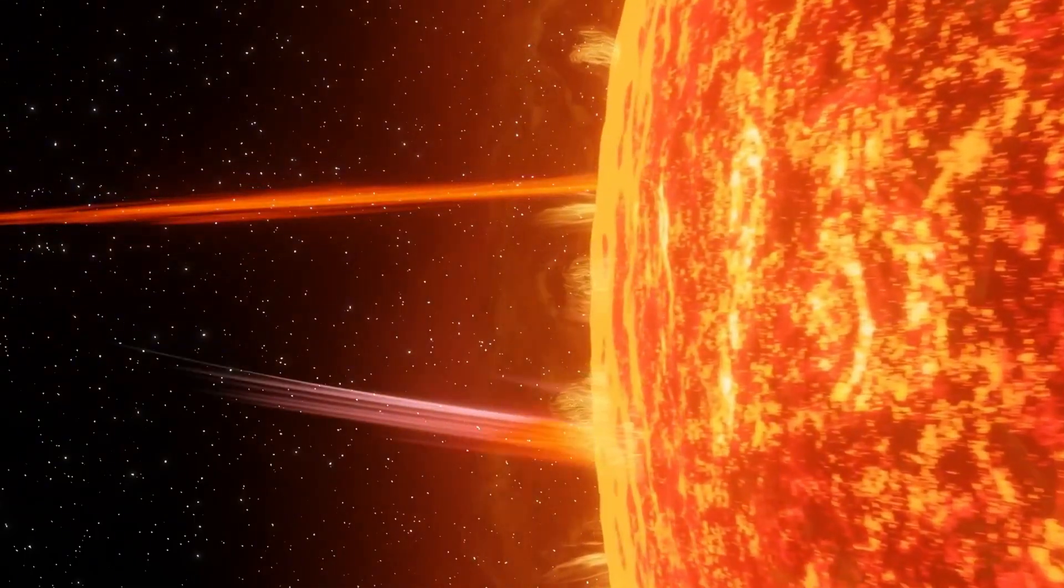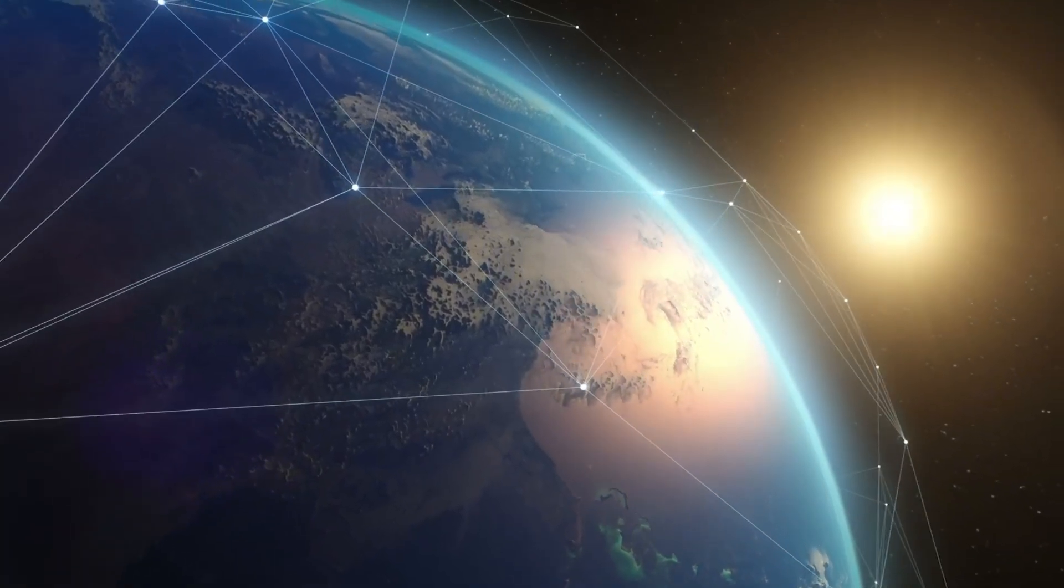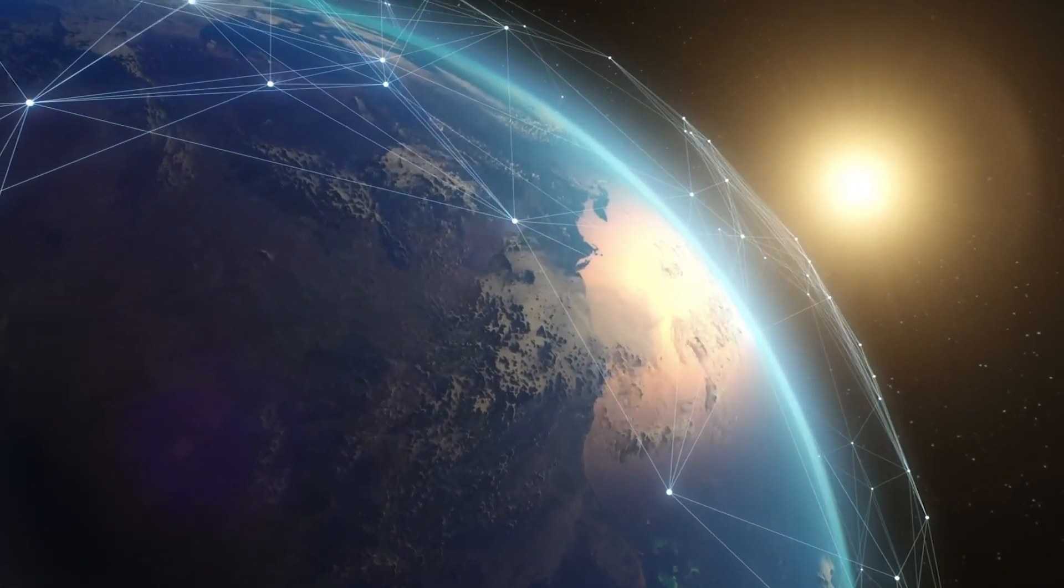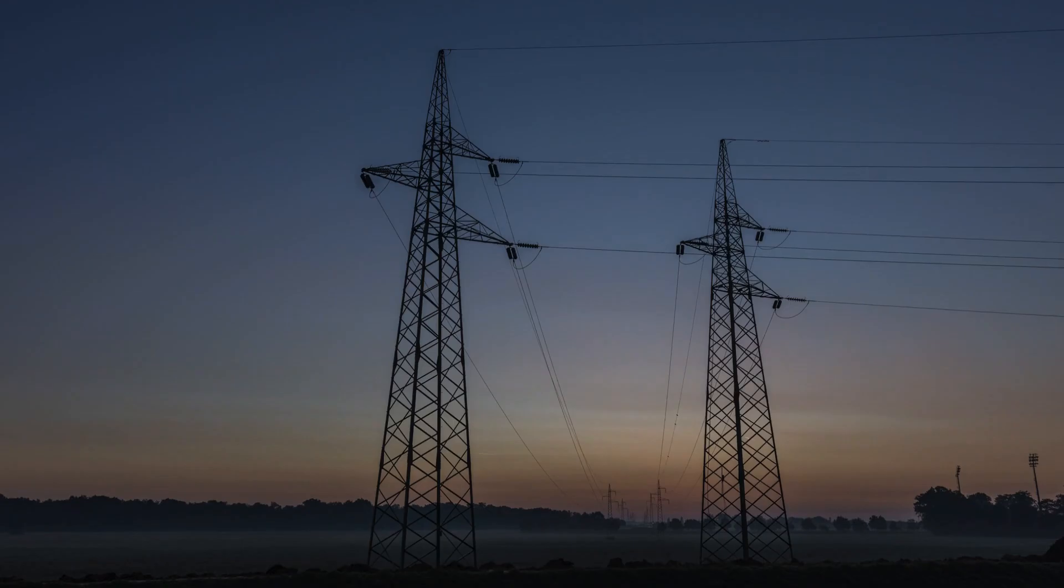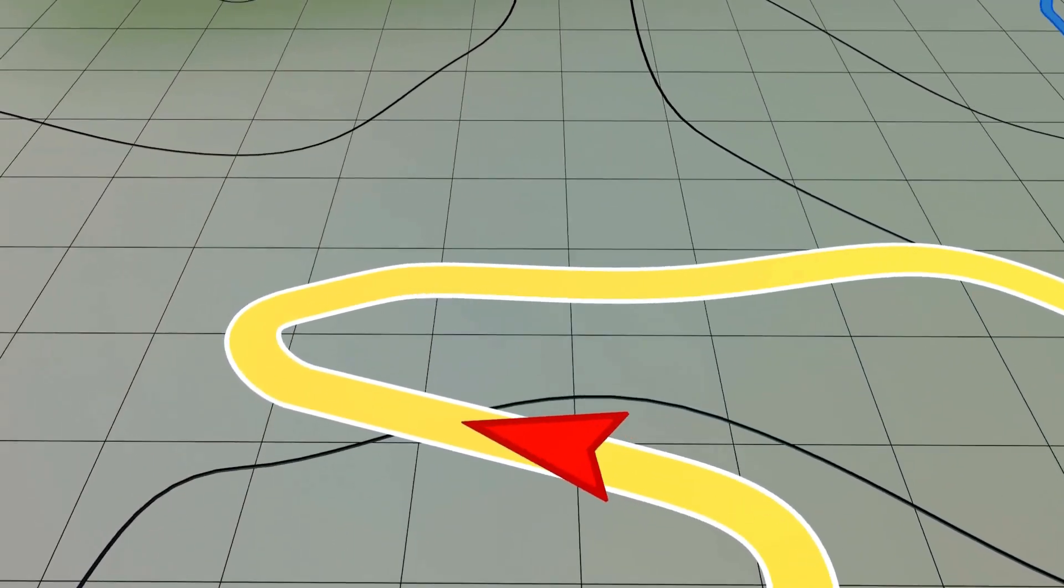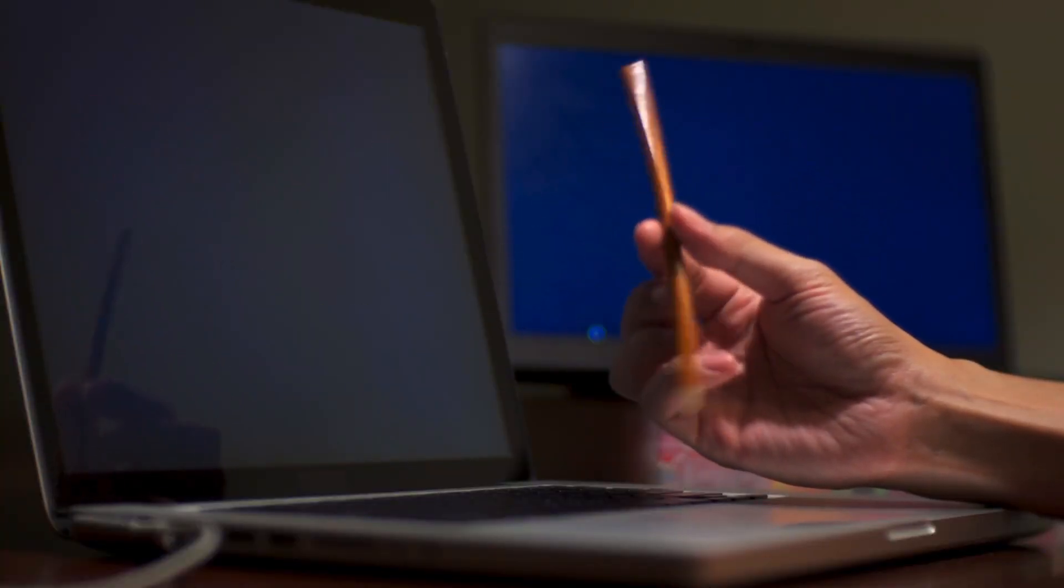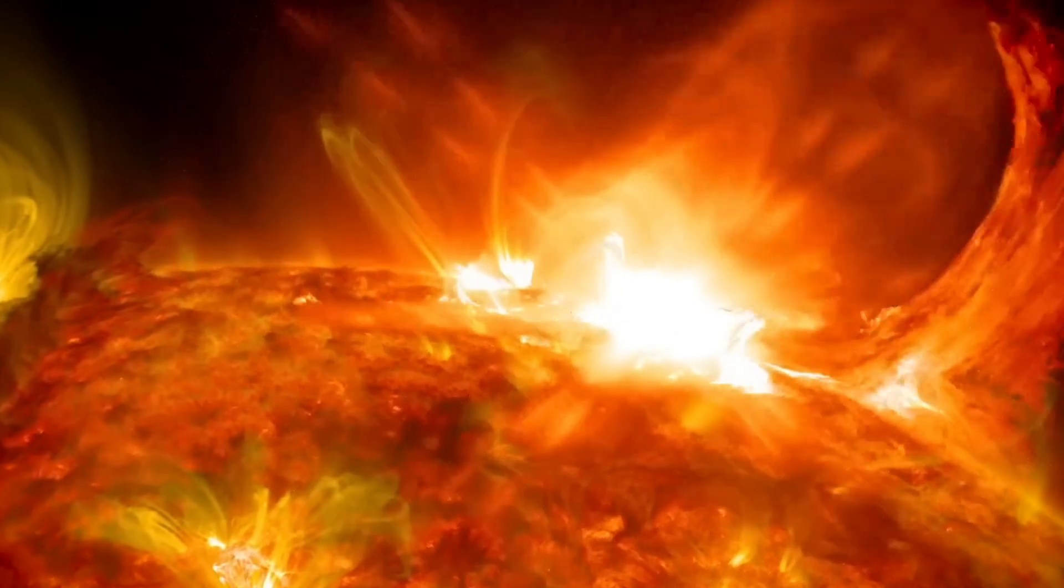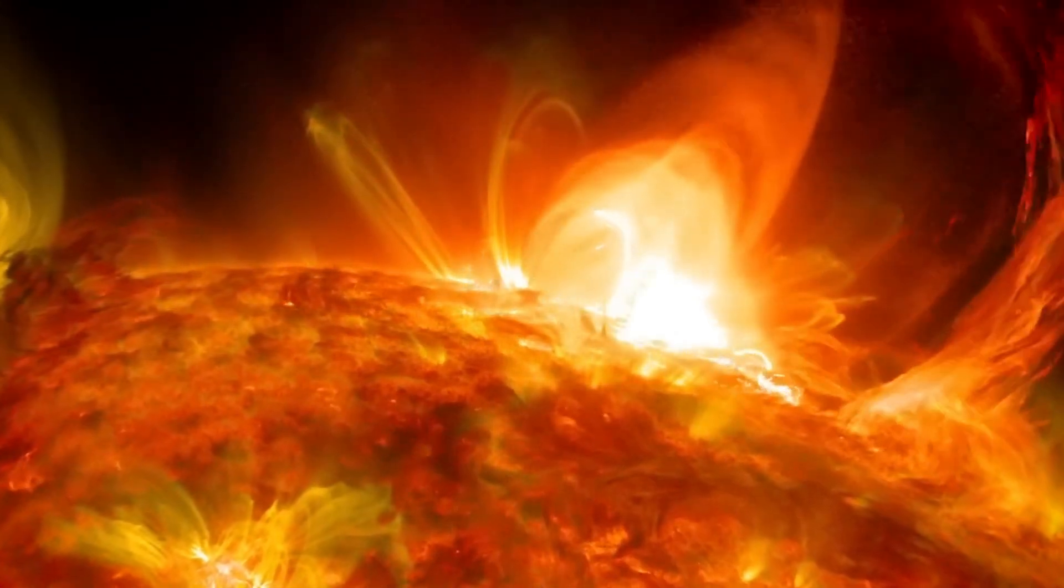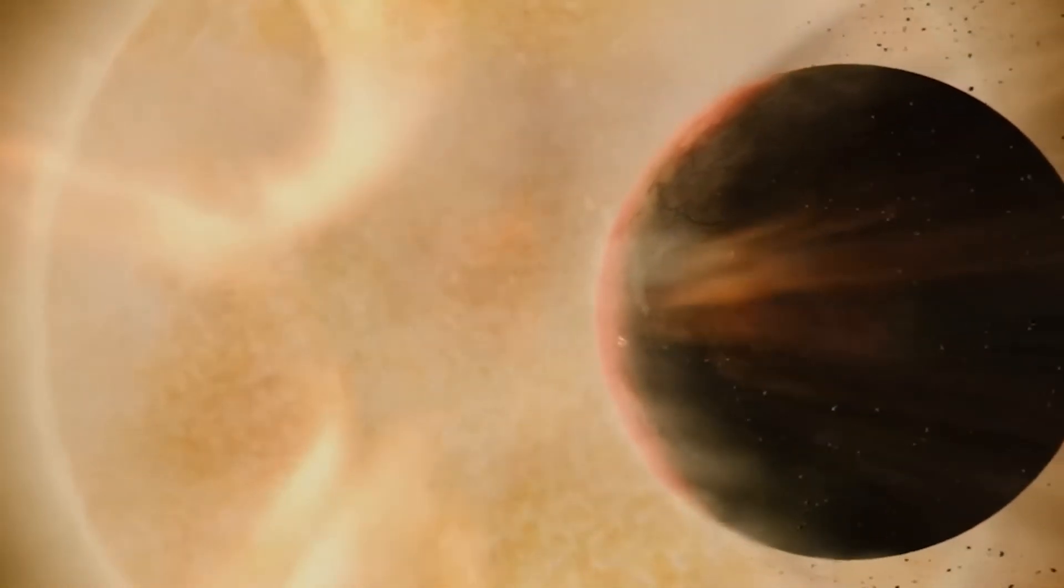Now, while these storms won't fry us to a crisp, they can wreak havoc on our technology. Picture this. Entire power grids knocked offline, satellites fried, GPS systems malfunctioning, and communication networks going dark. The last major event, known as the Carrington Event of 1859, caused telegraph systems to burst into flames and lit up the skies with auroras seen as far south as the Caribbean.